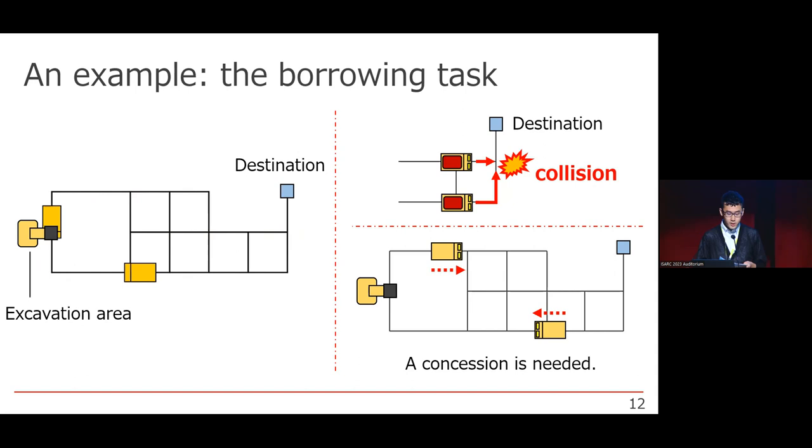The biggest point for machines is collision problem. If two or more machines go to the same place at the same time, the collision happens. This is because the rows of this construction field are too narrow. To avoid this collision, they have to acquire some method of concession.